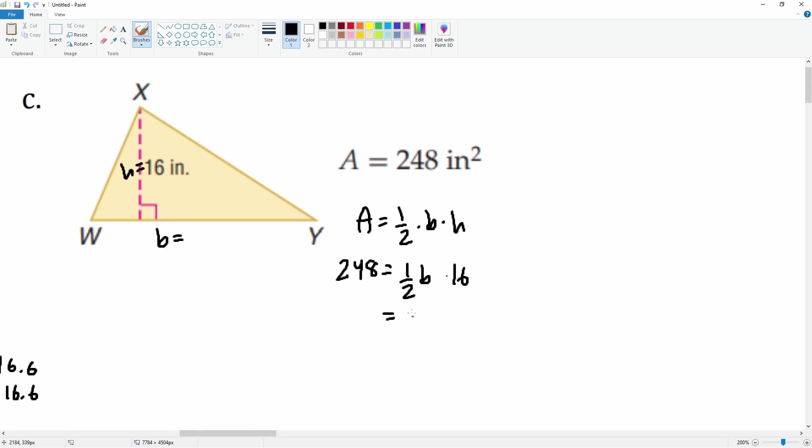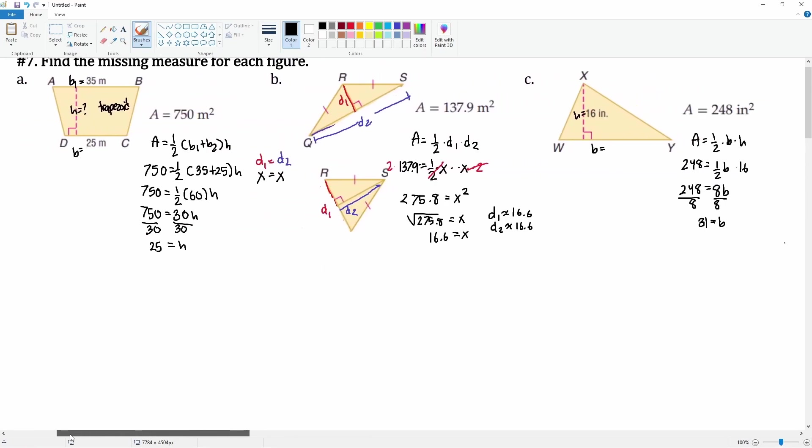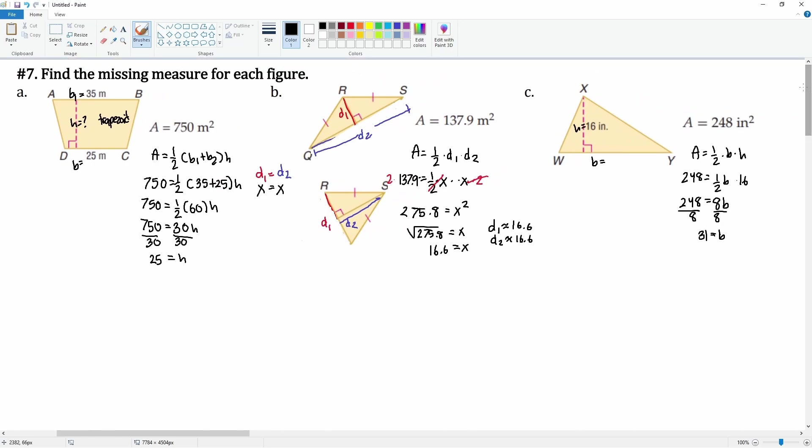We have 1/2 and 16 that multiplies to get 8, so 8b is on the right-hand side and 248 is on the left-hand side. Divide by 8 on both sides, and we get b = 31. So there you go, that is the base. That is how you solve for the missing figure.